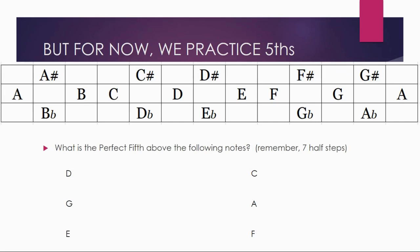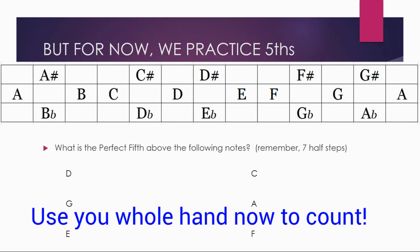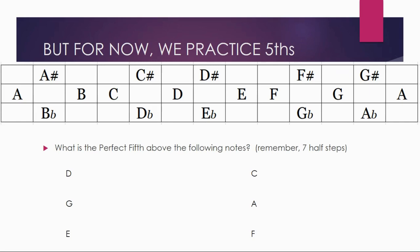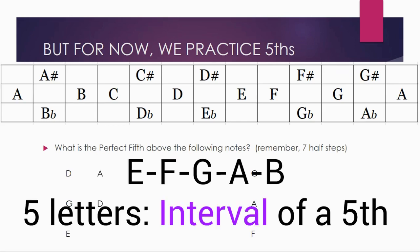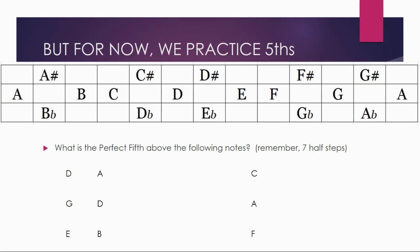Now let's practice perfect fifths — what's a perfect fifth above the following notes? Remember: five notes up in the alphabet, seven half steps. Start on D: D, E, F, G, A — some sort of A. Seven half steps higher is A natural — and an A note is in a D scale. Starting on G: five notes above G will be a D, and the D that is seven half steps above is D natural. Starting on E: five notes above takes you to some sort of B — seven half steps up gives you B natural. Starting on C takes us to G, starting on A takes us up to E, and starting on F — don't overcount the A — goes up to C.